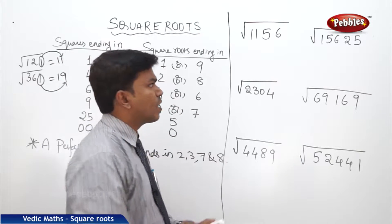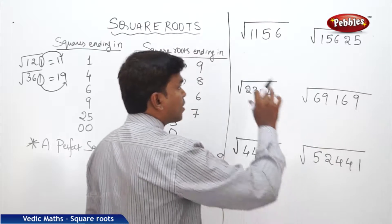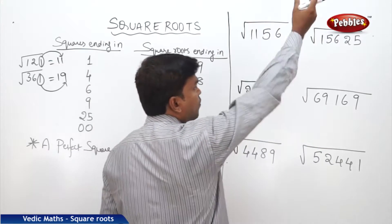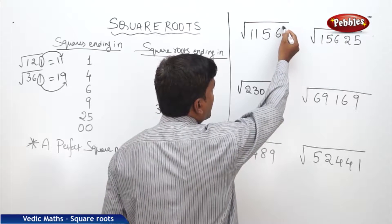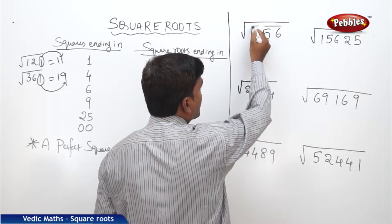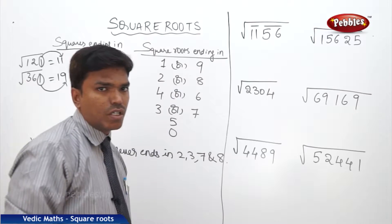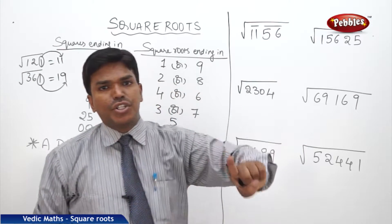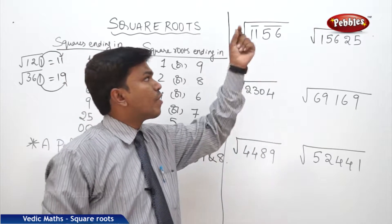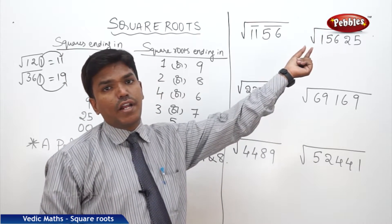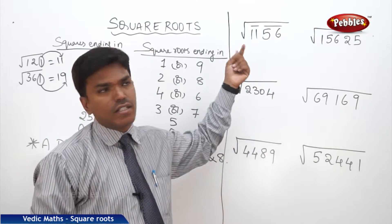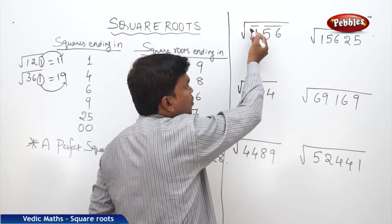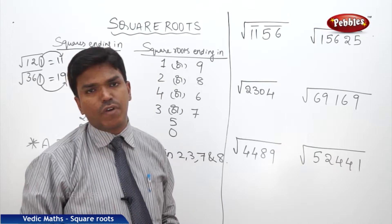Now clearly observe. What is the first step to finding the square root of a number? First of all, from the right side, you need to make the number partition into two-two digits. Make the number partition from the right side — first take two digits, then go for two digits. That is the first step of finding a square root.